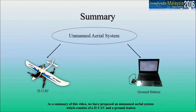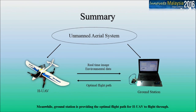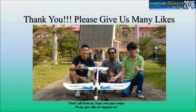As a summary, we have proposed an unmanned aerial system consisting of HUAV and a ground station. HUAV with self-balancing capability is used to capture real-time images and collect environmental data, then send it to the ground station. Meanwhile, the ground station provides the optimal flight path for HUAV to fly through. That's all from us — hope you enjoyed. Please give a like to support us.